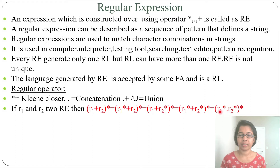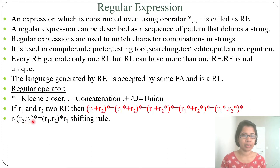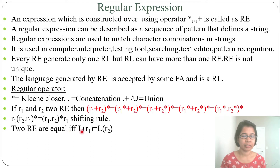If R2 is epsilon you can use R1, and if R1 is epsilon you can use R2 — whichever string you can generate by one form, you can also generate by the other. Also, R1 · R2* · R1* can be written as (R1 · R2)* · R1 — this is called the shifting rule, where we just shift the bracket. Two regular expressions are equal if the language of R1 equals the language of R2.